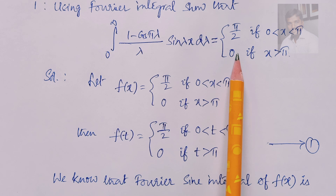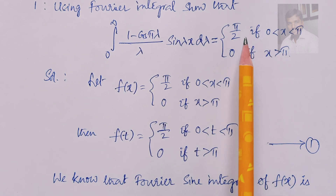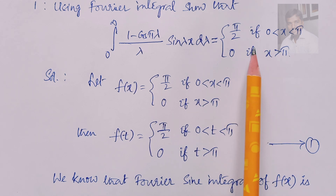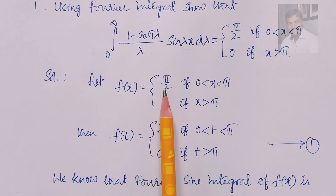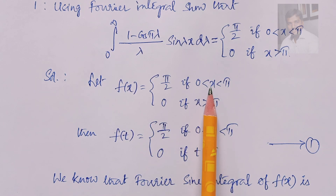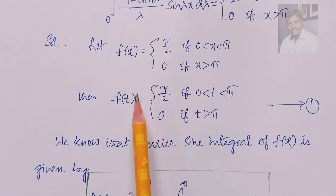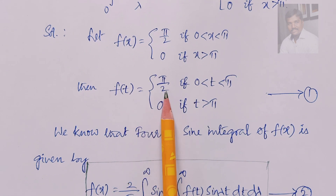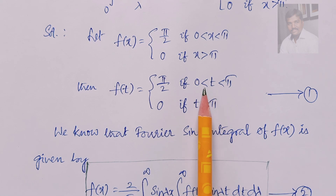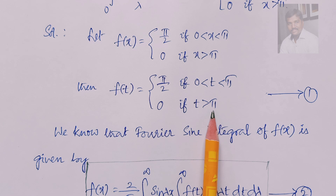First, we assume the right-hand side as some f(x). So f(x) equals π/2 if x is between 0 and π, and 0 if x is greater than π. Accordingly, f(t) equals π/2 if t is between 0 and π, and 0 if t is greater than π.